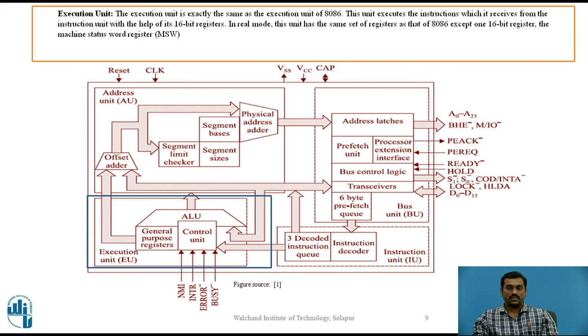Let us see the execution unit. The execution unit is exactly the same as the execution unit of 8086 microprocessor. This unit executes the instructions which it receives from the instruction unit with the help of its 16-bit registers. In real mode, this unit has the same set of registers as that of 8086 except one 16-bit register, the machine status word is there.